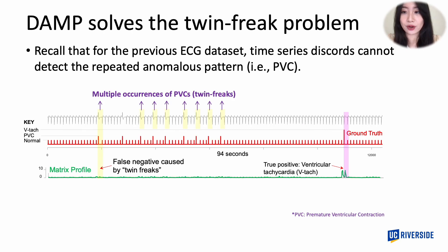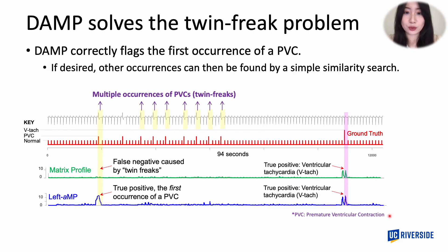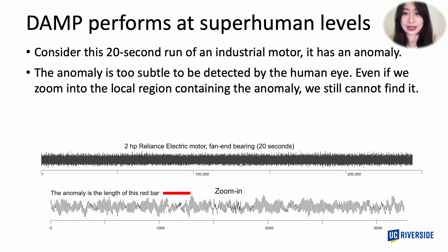Recall the previous ECG example — time series discord could not capture the train freaks, producing a false negative. But when we run DAMP on this data, on the left AMP at the bottom, you can see a big bump, which means DAMP found the first occurrence of the train freak. And once you find the first occurrence, you can find all the rest by a simple similarity search.